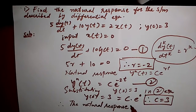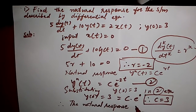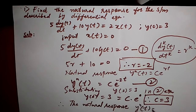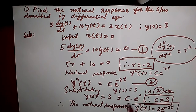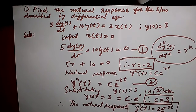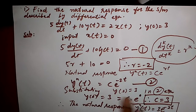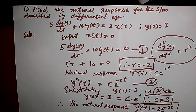The natural response y_n(t) is equal to 3 times e raised to minus 2t. This is the final answer. By substituting the value of C equal to 3 into the second equation, y_n(t) is equal to 3 e raised to minus 2t.